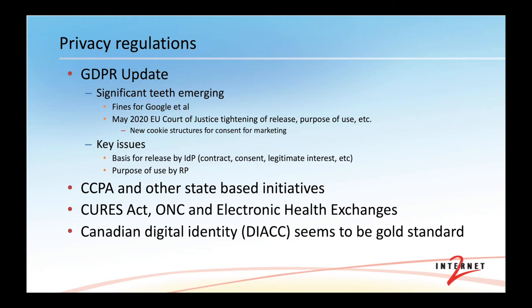Issues that are central in this ongoing privacy space are the basis for release — why is information being released by the identity provider, and for what purpose will the relying party use those attributes? The cookie paradigm with three or four categories of use is an example of that. The California Consumer Privacy Act and other state-based initiatives are out there as well, but they're inconsistent and it's not yet clear what consequence they have for our communities.